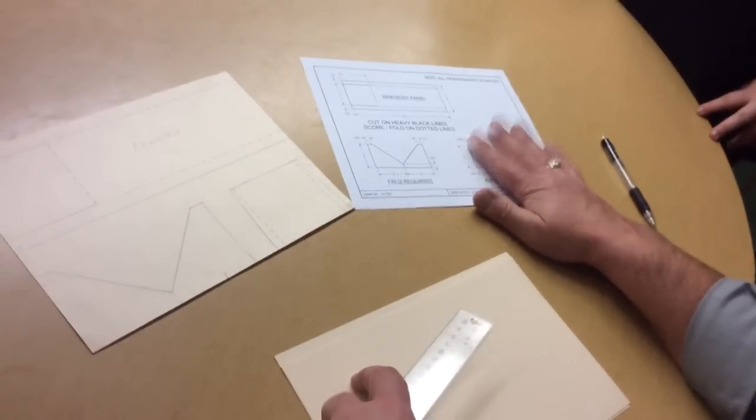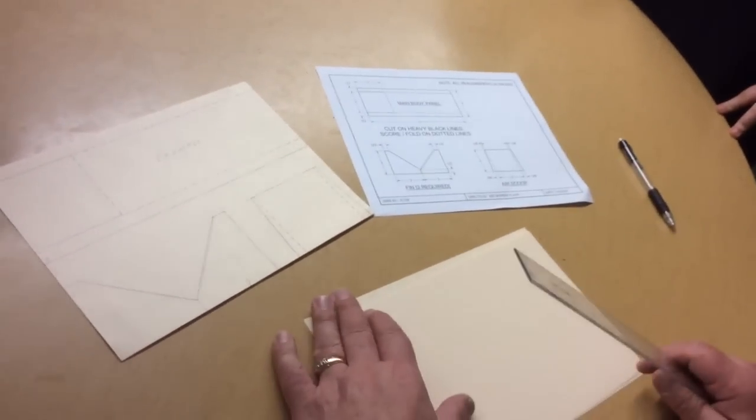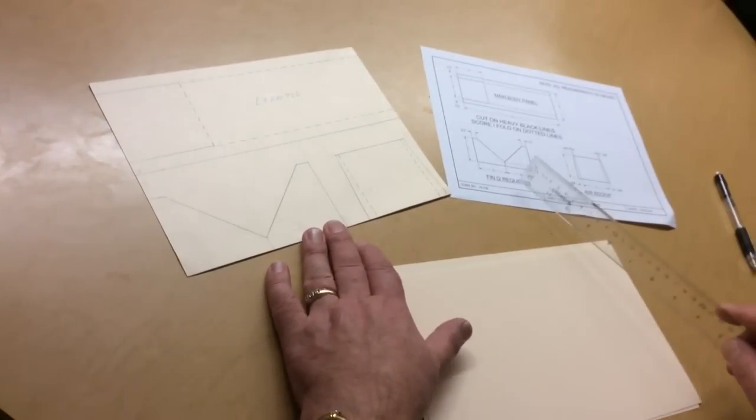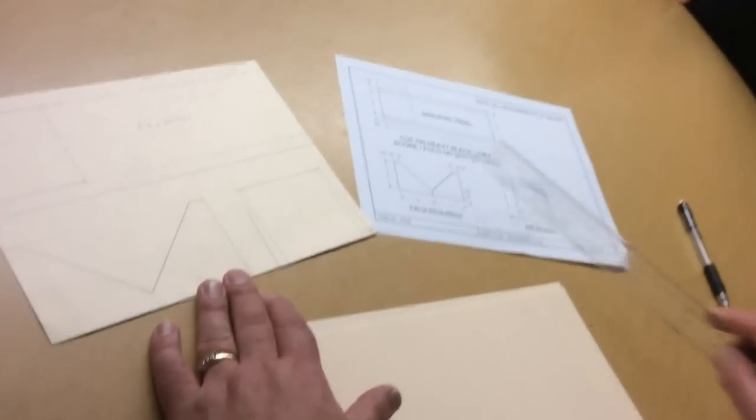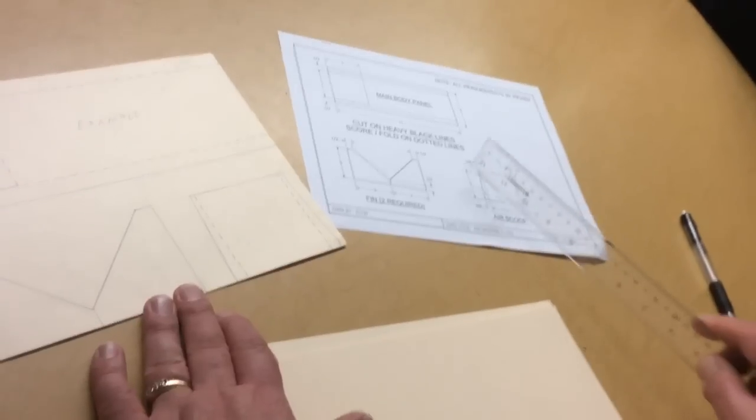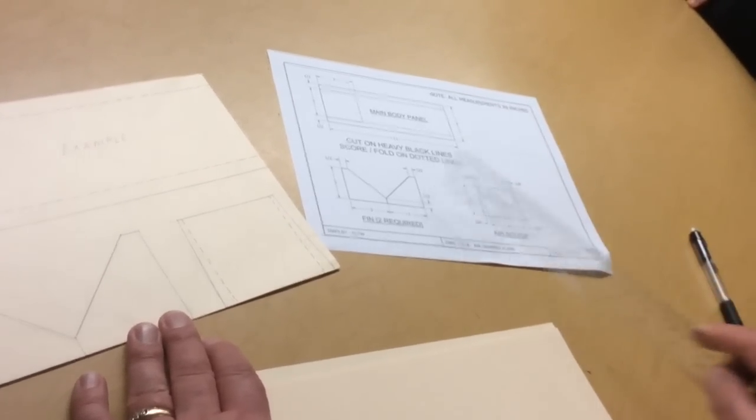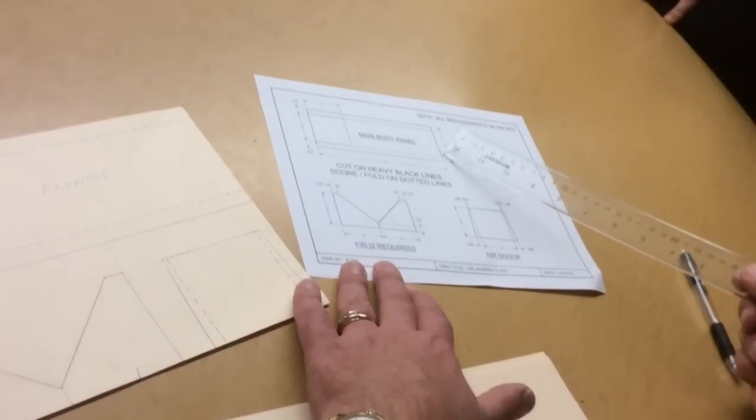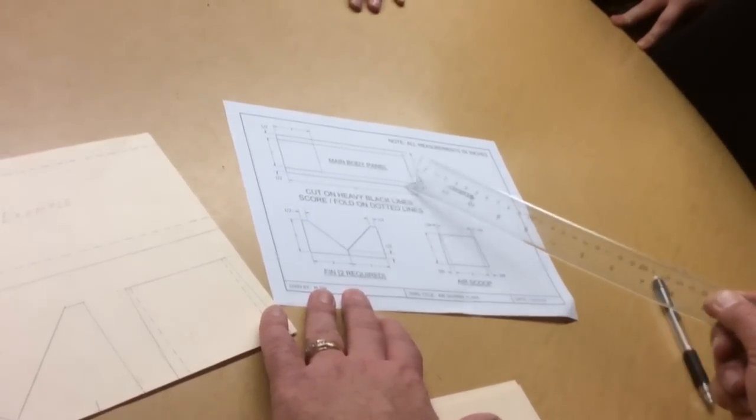You're all going to get this paper which shows you the exact dimensions and sizes that you need to lay out your parts. There's a main body panel, fins—there are two of them—and then an air scoop. The exact dimensions for each one of these parts are on this paper. The main body panel is overall 4 inches wide and 11 inches long.